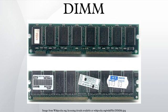The most common types of DIMMs are: 72-pin SO-DIMM, used for FPM DRAM and EDO DRAM; 100-pin DIMM, used for printer SDRAM; 144-pin SO-DIMM, used for SDR-SDRAM; 168-pin DIMM, used for SDR-SDRAM; 172-pin micro-DIMM, used for DDR-SDRAM; 184-pin DIMM, used for DDR-SDRAM; and 200-pin SO-DIMM, used for DDR-SDRAM and DDR2-SDRAM.